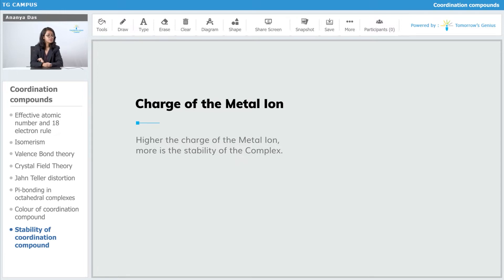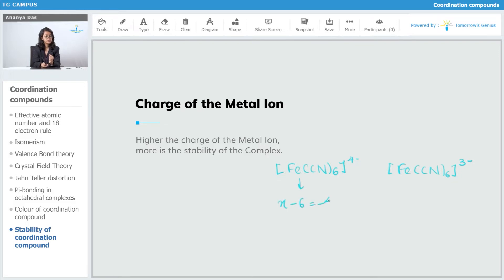For example, comparing the stability of [Fe(CN)₆]⁴⁻ and [Fe(CN)₆]³⁻. In the first complex, x minus 6 equals minus 4, giving x equal to plus 2, so the charge on iron is +2. In the second, x minus 6 equals minus 3, giving x equal to plus 3. So the second complex is more stable because the charge on the metal ion is higher.